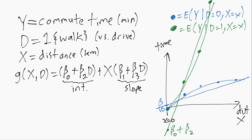So we can see in this case, beta two must be negative because beta naught plus beta two is actually less than beta naught.